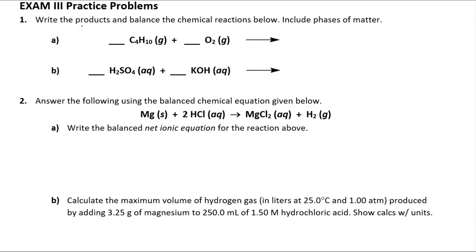This first one says: write the products and balance the reaction below. Don't forget to include the phases of matter. We've got a hydrocarbon — this is butane — reacting with oxygen. Whenever you react something with pure oxygen, that's a good indicator it's a combustion reaction. When you have a complete combustion reaction, your products are always going to be water — liquid or gas, probably gas since it's hot — and carbon dioxide, which is definitely a gas. There are your two products.